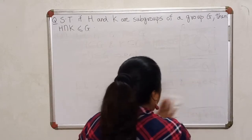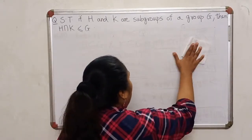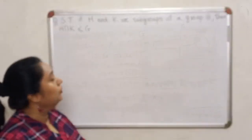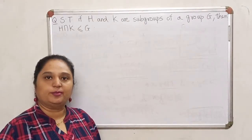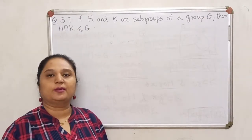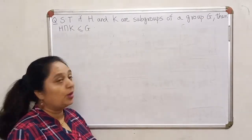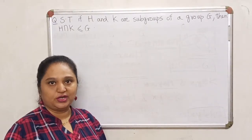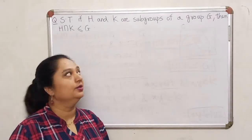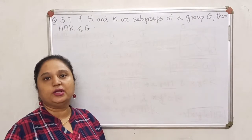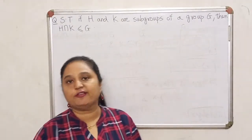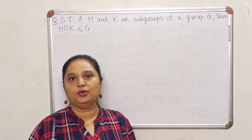Now, there is an operation which you talk about alongside intersection. So when we prove that intersection of two subgroups is a subgroup, it is a very natural question to ask whether the union of two subgroups is also a subgroup. The answer for the union, however, is no. So what I need to do is give you an example where things do not work out for the union.